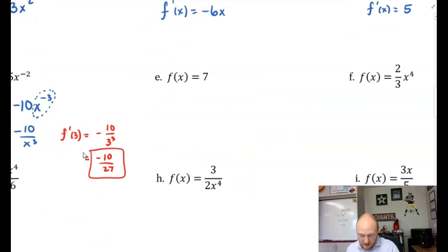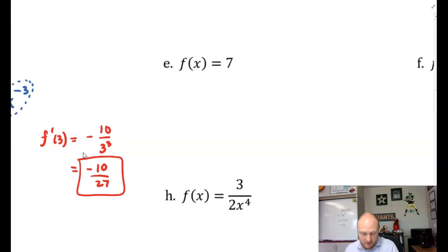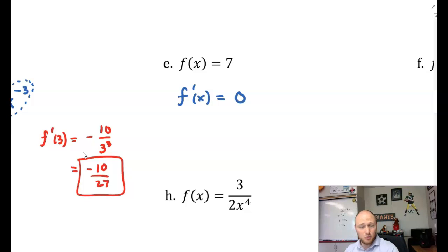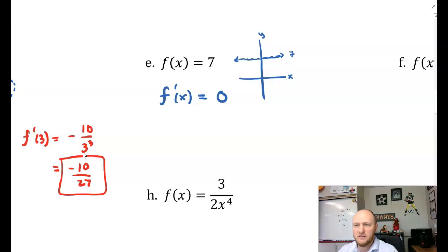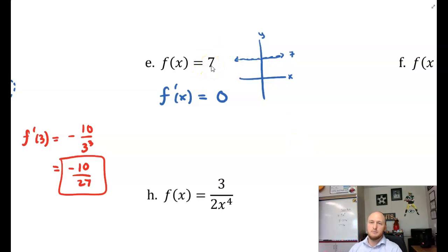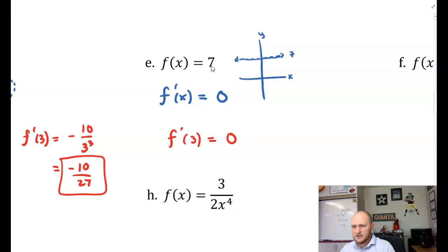Part E: f of x is equal to 7. f prime of x is equal to 0. This is a constant function. Think about it: y equals 7 is a flat horizontal line — what's the slope of a constant function? Zero. So whenever you take the derivative of a constant, it just becomes zero. And therefore f prime of 3 is also equal to zero.